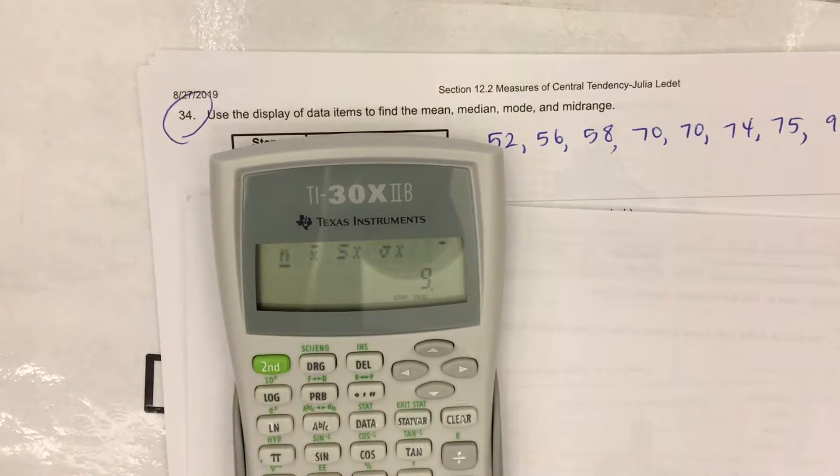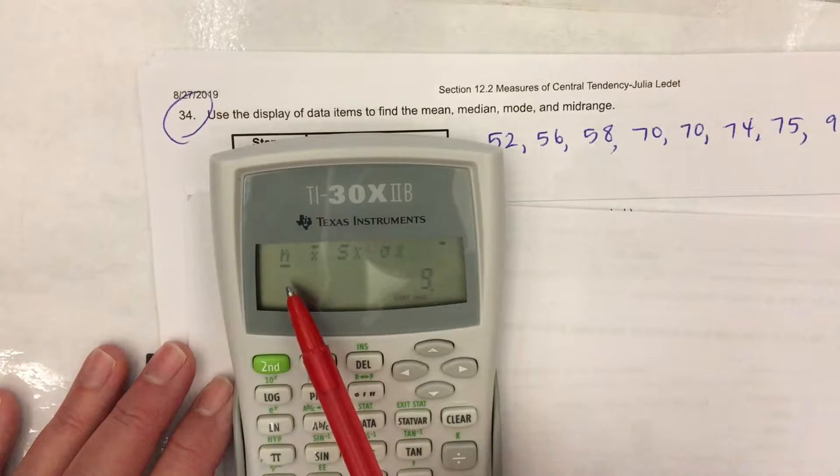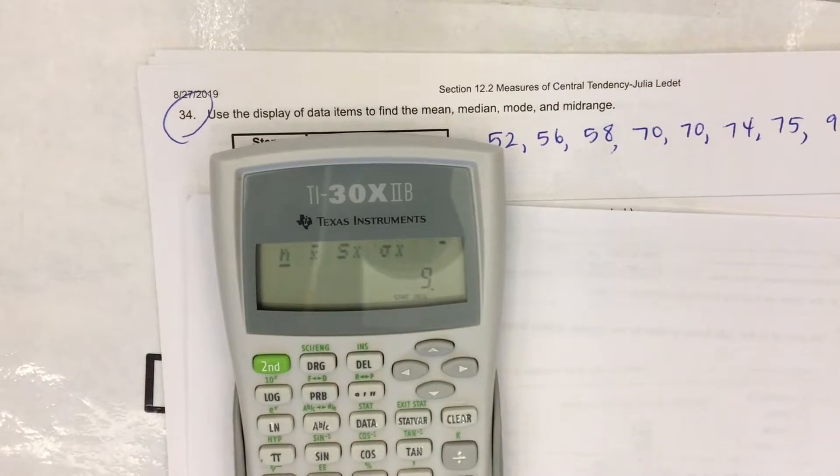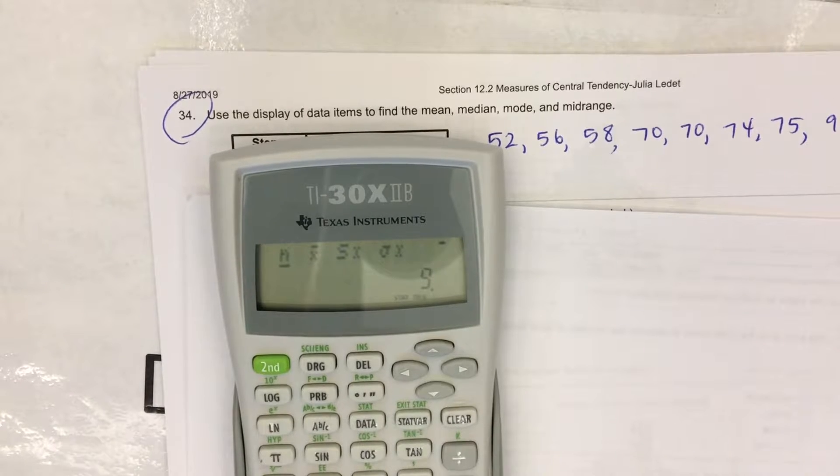I have N first. N is underlined. So that's the number that's showing. What does N tell me? What is nine? How many data points there are. There are nine data items.